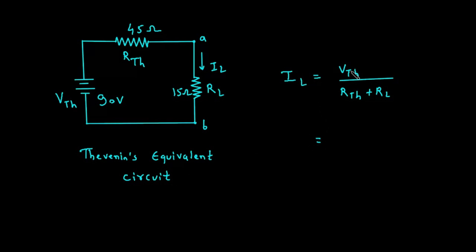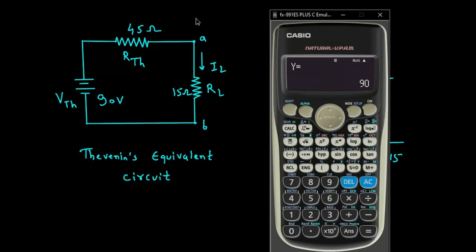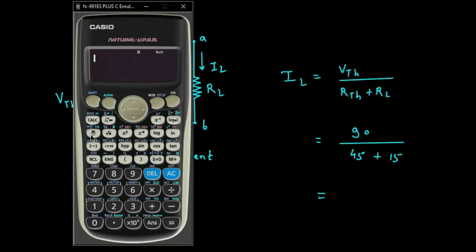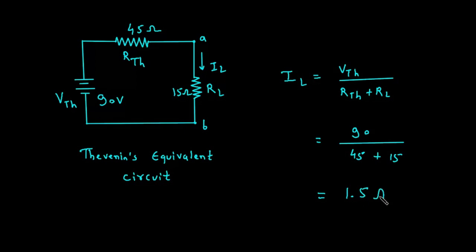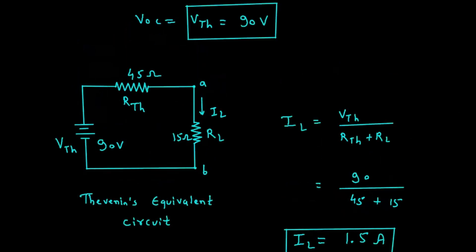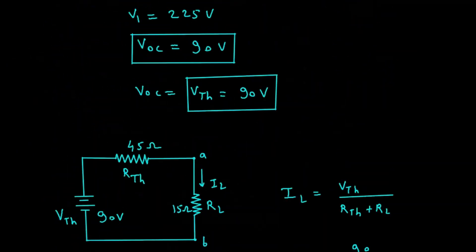We will find the value of IL. IL equals VTH divided by RTH plus RL, which is 90 divided by 45 plus 15, giving 90 divided by 60, which equals 1.5 ampere. This is the value of IL — this is what we had to find in this question. IL is equal to 1.5 ampere.